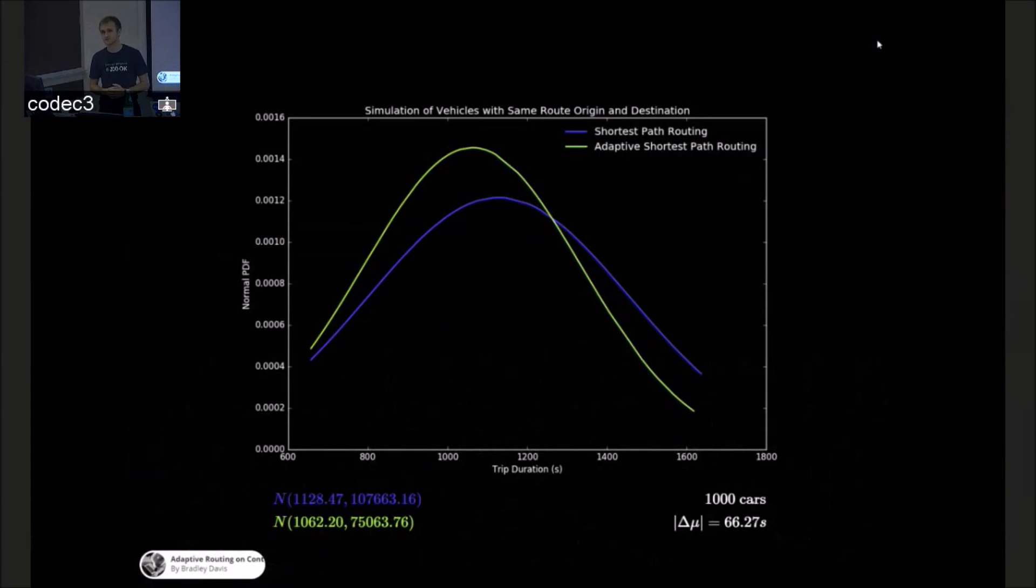You can see here the normal curves of the durations of the times. And while, of course, some cars experience a slower routing time, the real takeaway is that you have a higher probability of getting a lower travel time.